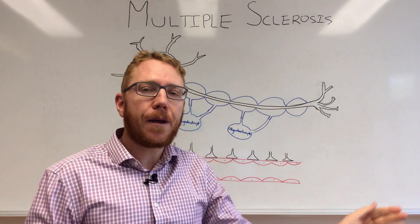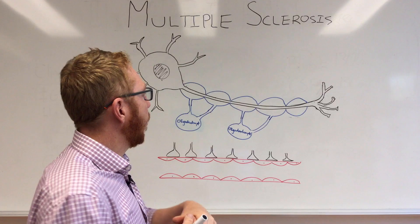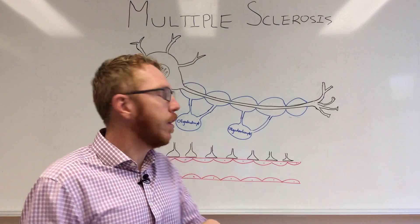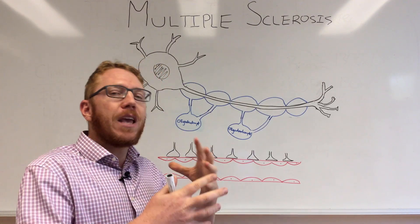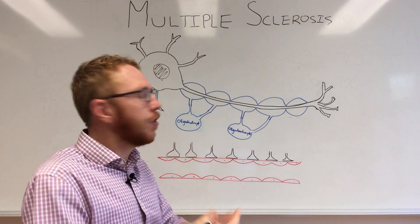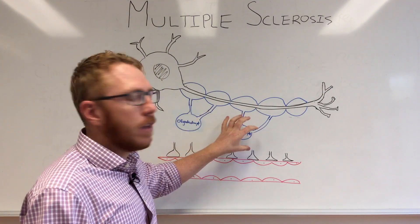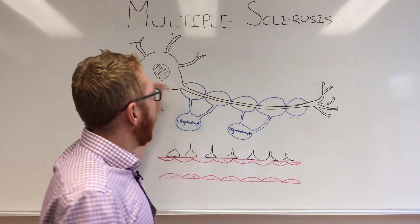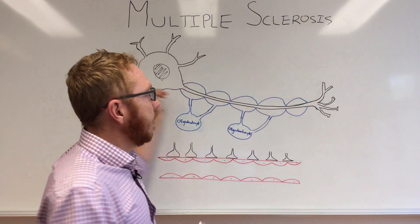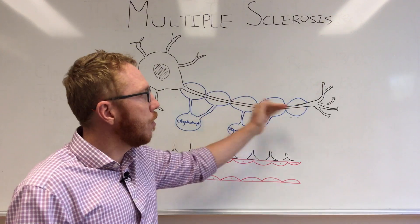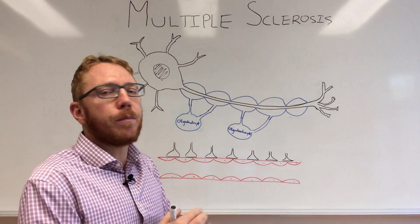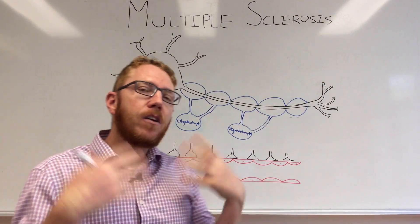With multiple sclerosis, what is essentially happening? Well, for some reason we have inflammation and destruction which leads to the destruction of these oligodendrocytes and subsequently their myelin. So the speed of action potential is diminished and slowed and may even stop altogether.